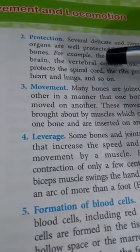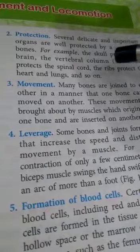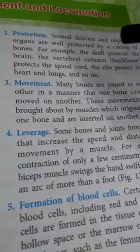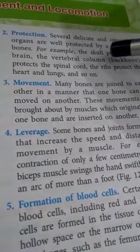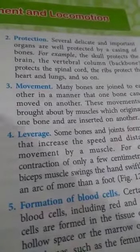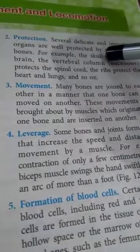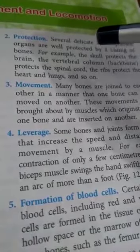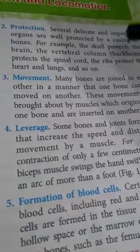The second function is protection. The skeleton gives protection to several delicate organs. For example, your brain is present inside your skull. In your skull there is a brain box that is made up of 8 bones, inside which your brain is present. So this brain box gives protection to your brain.